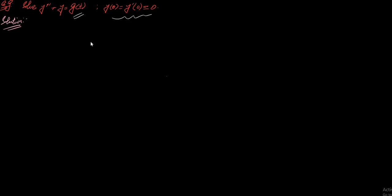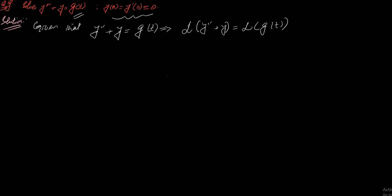Initial conditions are given. The given equation is y double prime plus y equals g of t. Let us apply this formula.